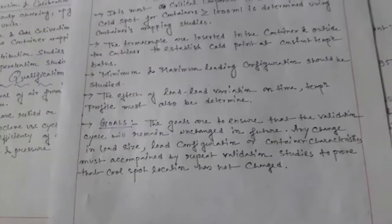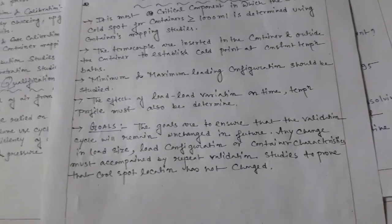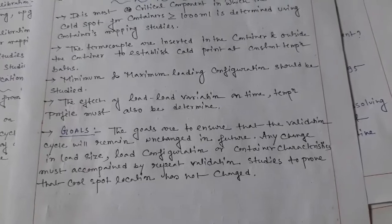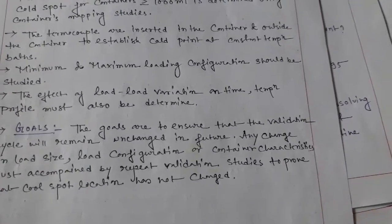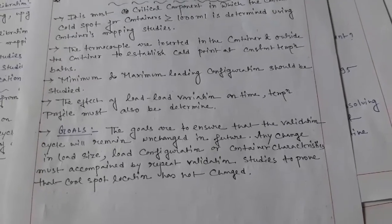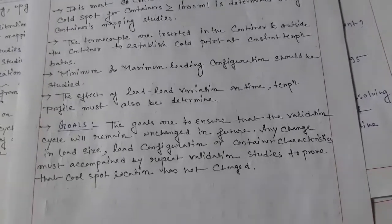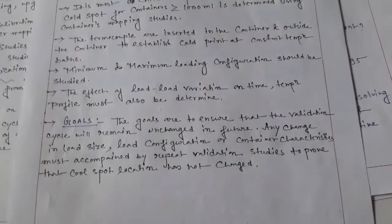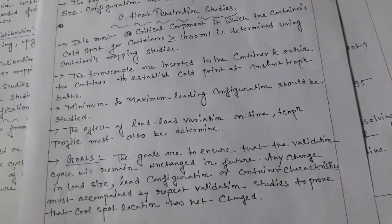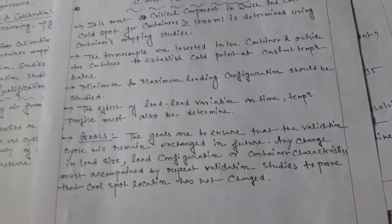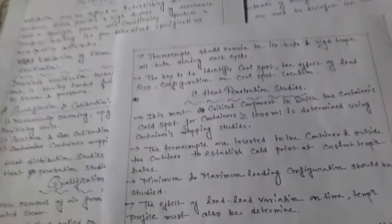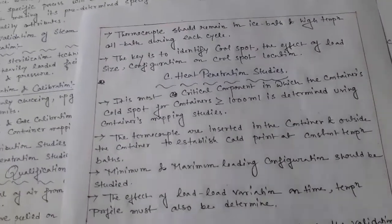The goals are to ensure that the validation cycle will remain unchanged in the future. Any change in load size, load configuration, or container characteristics must be accompanied by repeat validation studies to prove that the cool spot location has not changed. These points are very important for moisture sterilization and autoclave validation.